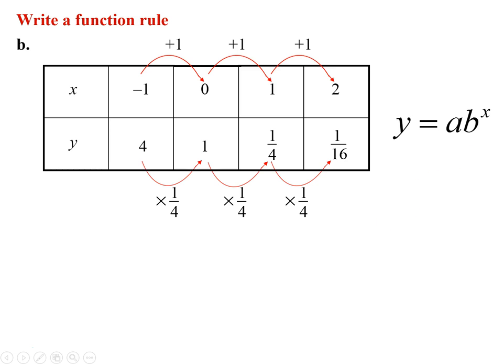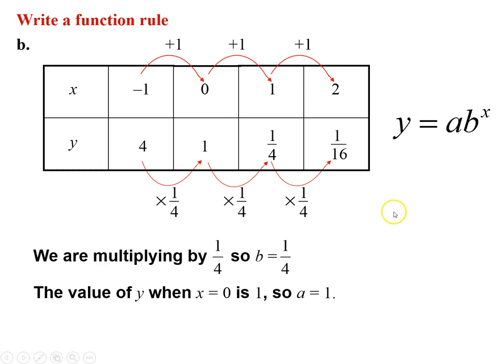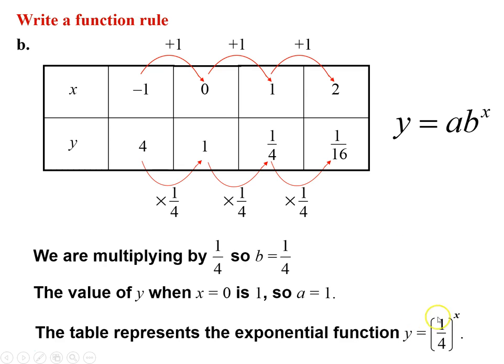So we know that we're multiplying by 1/4. That would be my base. I look to 0 to see what my starting point is. My starting point when x is 0 is when y is 1, so I know that a is going to be just 1. So my function is 1/4 to the x power.